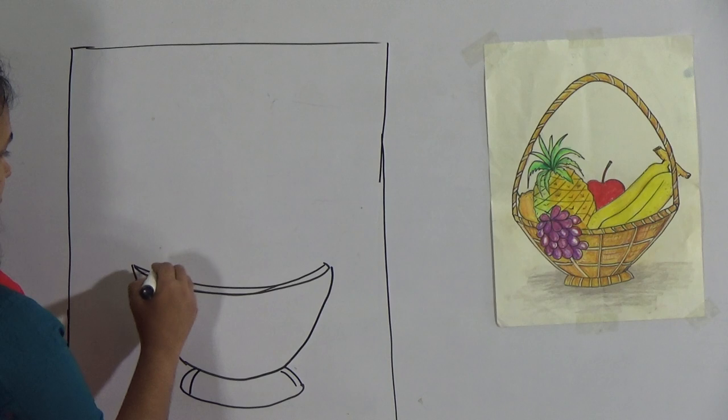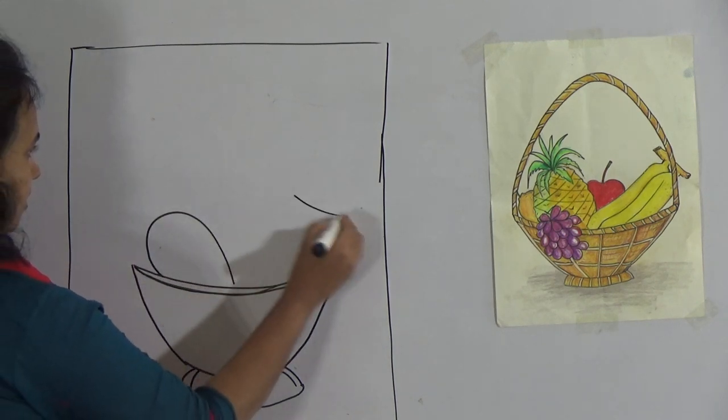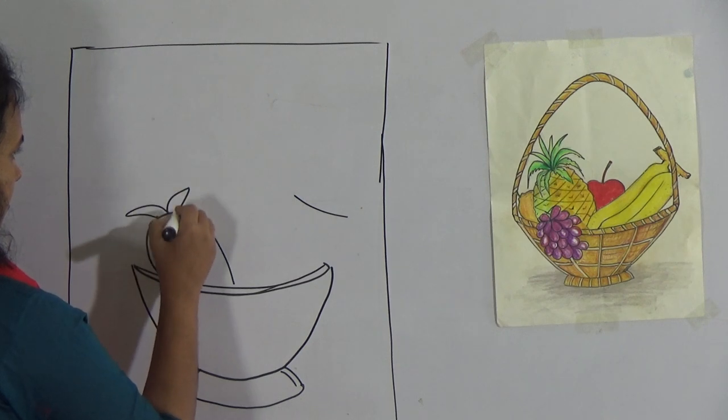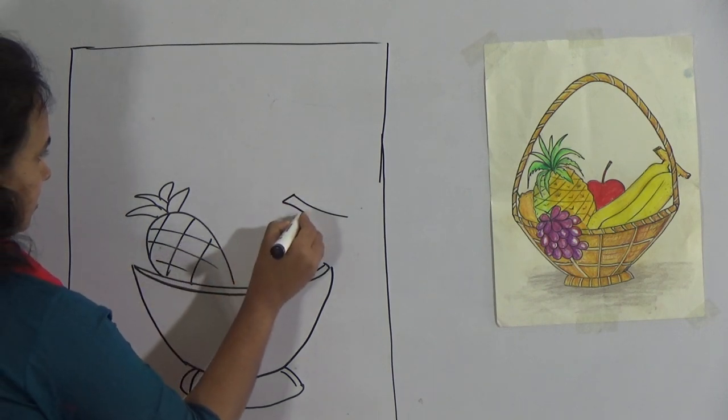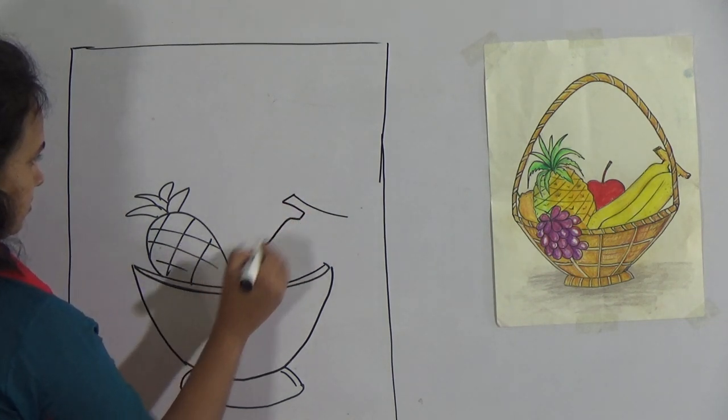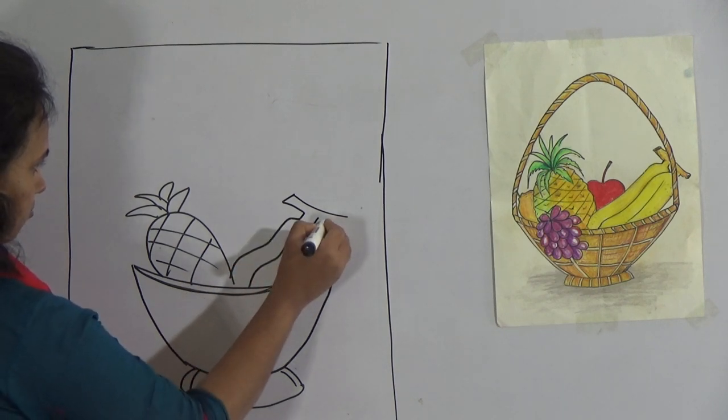Then give the fruits one by one. First the pineapple. And after that draw the banana, a pair of banana.